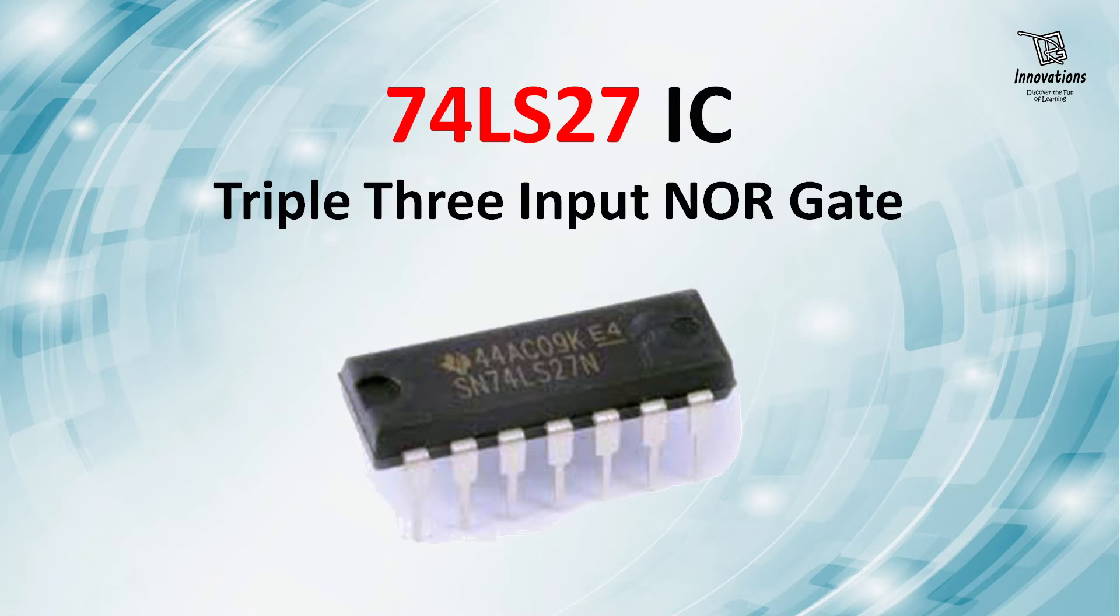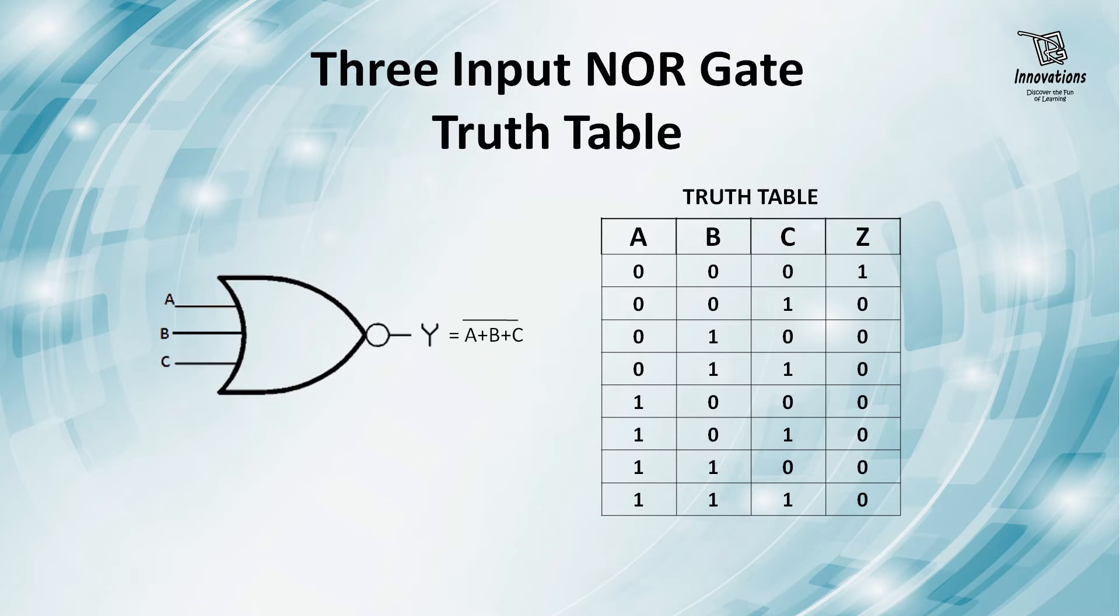So let us first have a quick look at the truth table of a three-input NOR gate. This is the symbol of a three-input NOR gate where A, B, C are inputs and Y is the output, and Y equals A plus B plus C bar. That means Y equals the inversion of A plus B plus C.